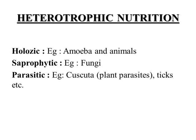Holozoic nutrition takes place in Amoeba and other animals. Saprophytic mode of nutrition is a type in which organisms feed on dead and decaying matter, and this type is present in fungi. Parasitic mode of nutrition involves parasites that live inside or outside the body of another organism, known as the host, and derive their nutrition from it. This type is present in Cuscuta, which is a plant parasite, and ticks, which are animal parasites.